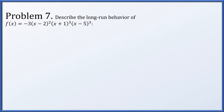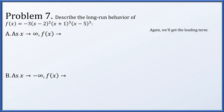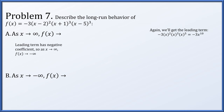For problem 7, describe the long-run behavior of this polynomial. Again we just need the leading term. From factors (x minus 2)(x plus 1)(x minus 5) and others, always picking x when expanding, we end up with negative 3x to the tenth as the leading term. That's a negative leading coefficient, so as x goes to infinity, f(x) goes to minus infinity. The degree is even (degree 10), so it does the same thing in both directions — to the left it also goes to minus infinity.